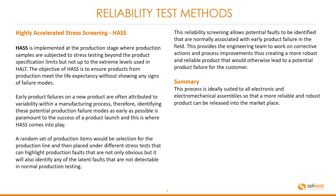And this is where HASS comes into play. A random set of production items will be selected from the production line and placed under different stress tests that can highlight production faults that are not only obvious, but will also identify any latent faults not detectable in normal production testing. This reliability screening allows potential faults to be identified that are normally associated with early production failure in the field. This provides the engineering team the opportunity to work on corrective actions and process improvements, thus creating a more robust and reliable product. In summary, this process is ideally suited to all electronic and electromechanical assemblies so that a more reliable and robust product can be released into the marketplace.